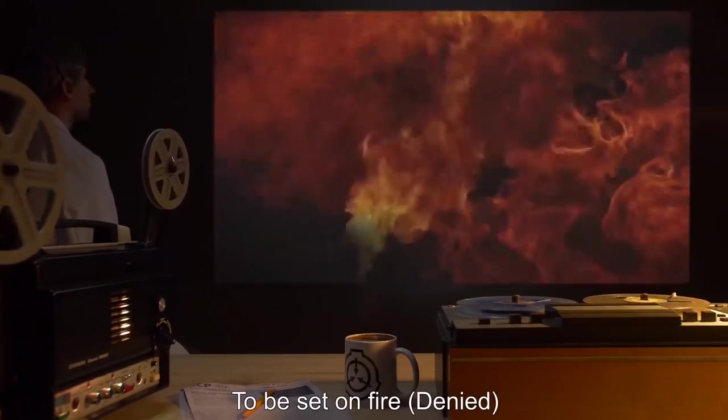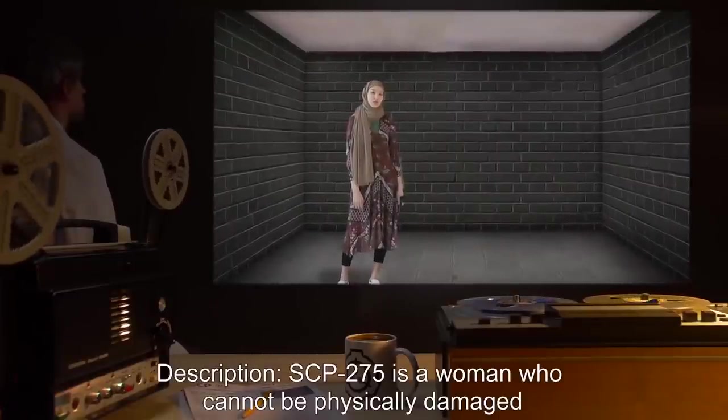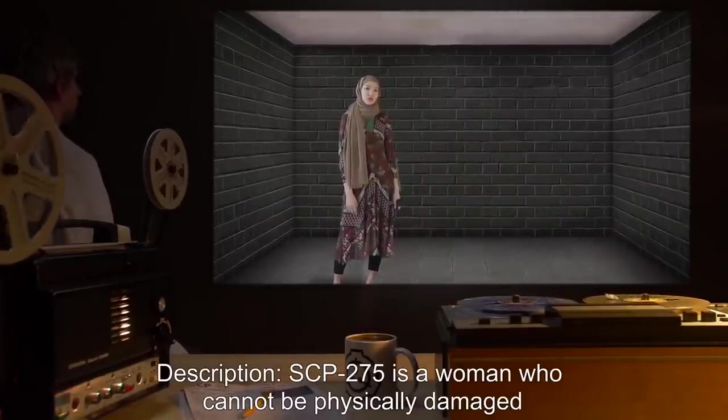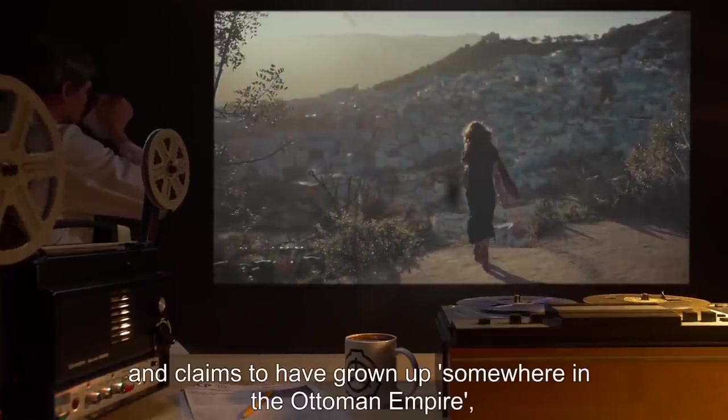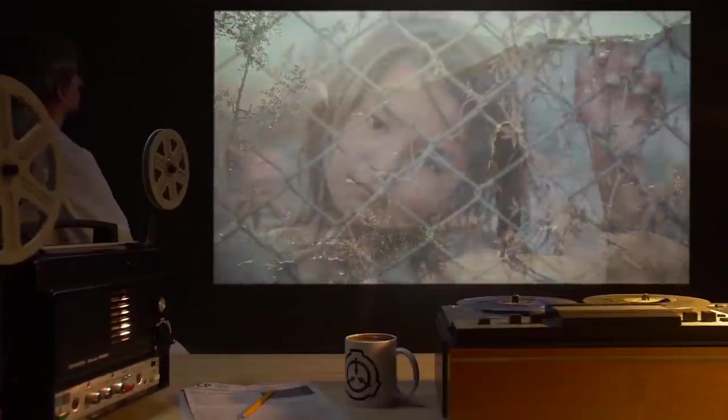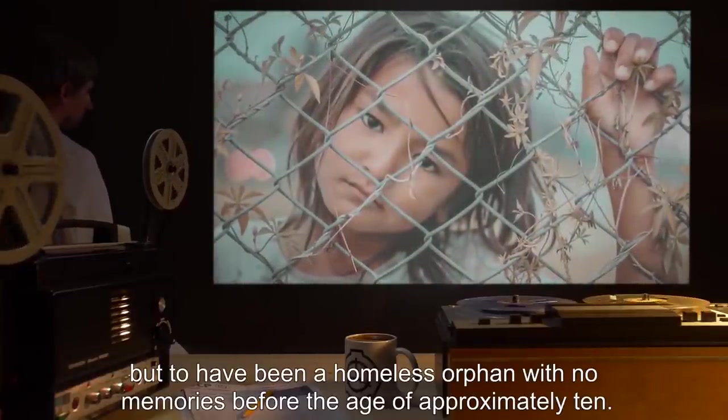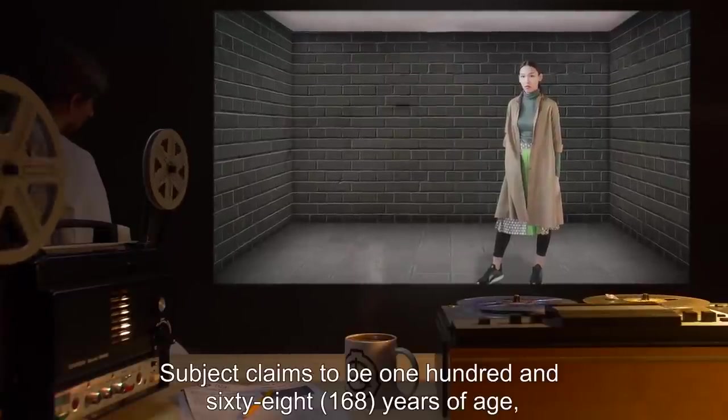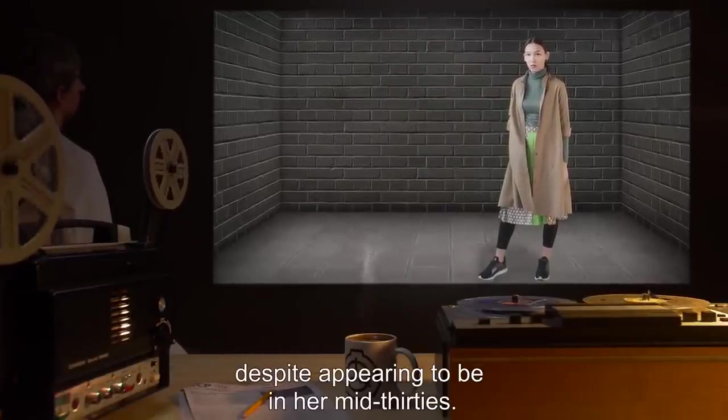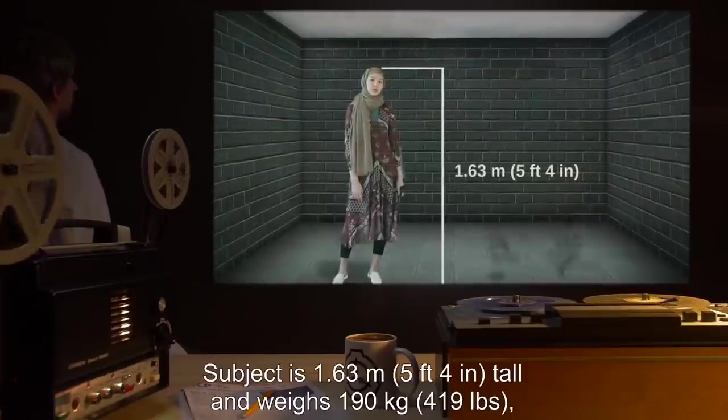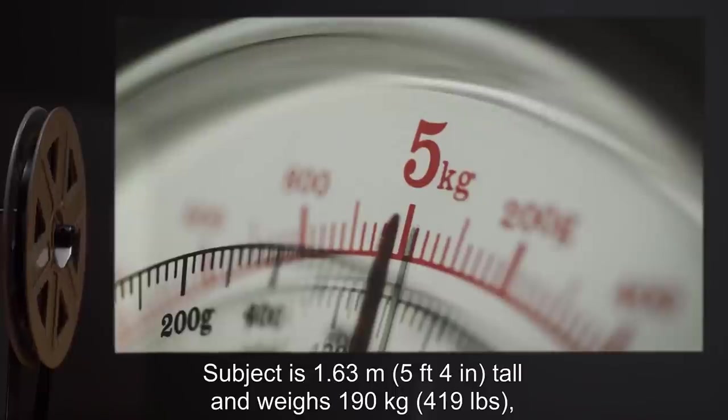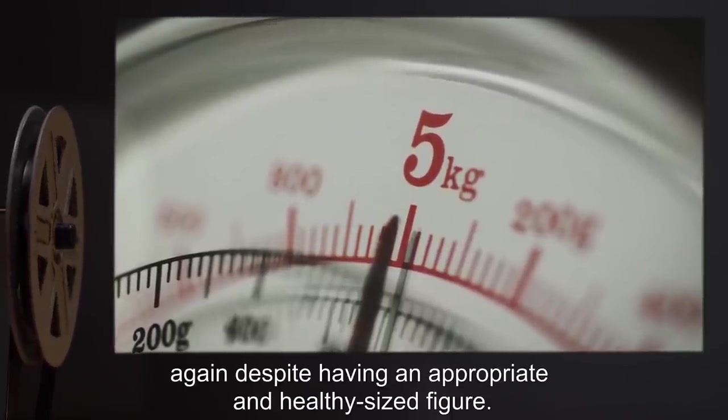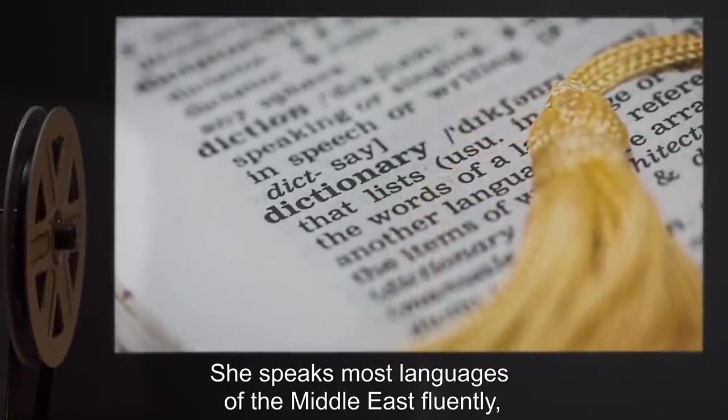Description: SCP-275 is a woman who cannot be physically damaged by any means available to the Foundation. Subject is of apparently Middle Eastern origin and claims to have grown up somewhere in the Ottoman Empire, but to have been a homeless orphan with no memories before the age of approximately 10. Subject claims to be 168 years of age despite appearing to be in her mid-30s. Subject is 1.63 meters (5 foot 4 inches) tall and weighs 190 kilograms (419 pounds), again despite having an appropriate and healthy-sized figure. Hair and eyes are brown. She speaks most languages of the Middle East fluently and speaks English with a mild accent.